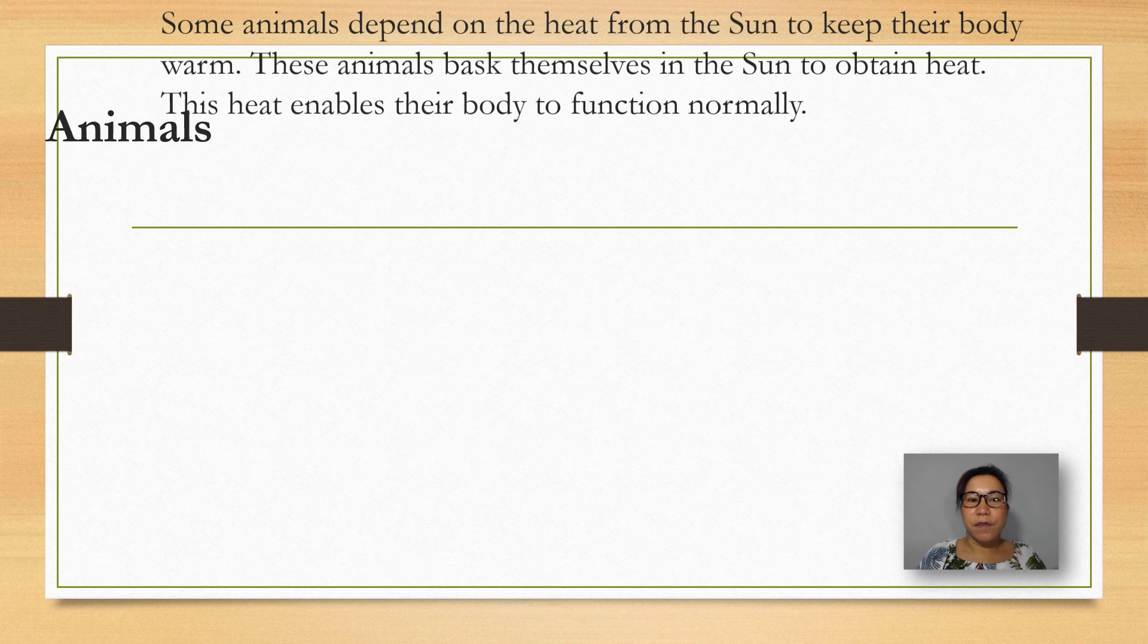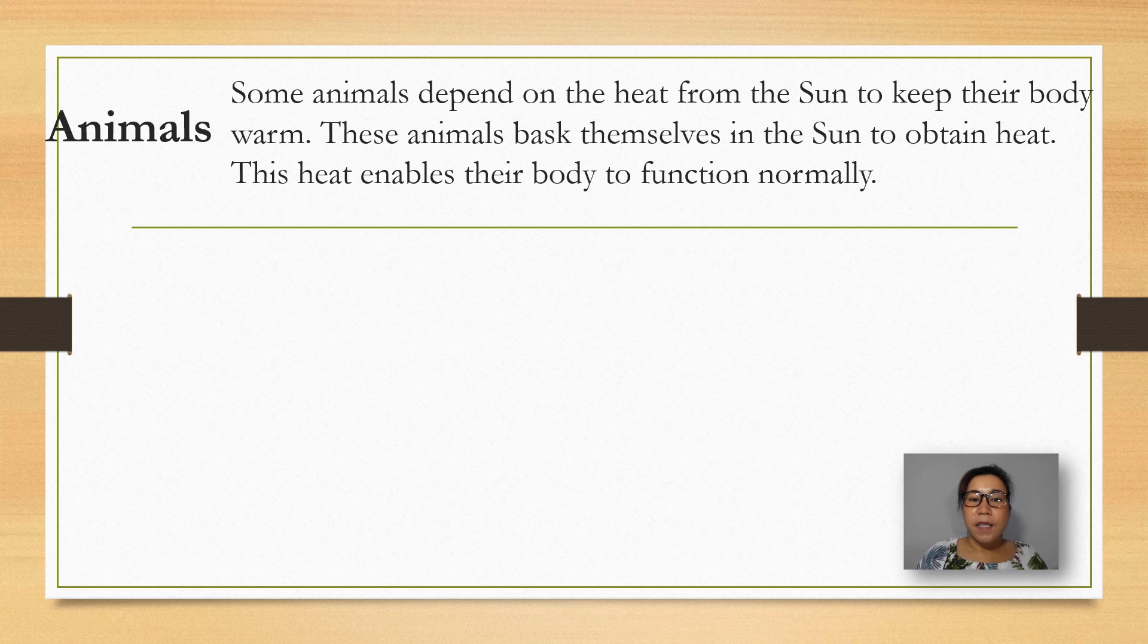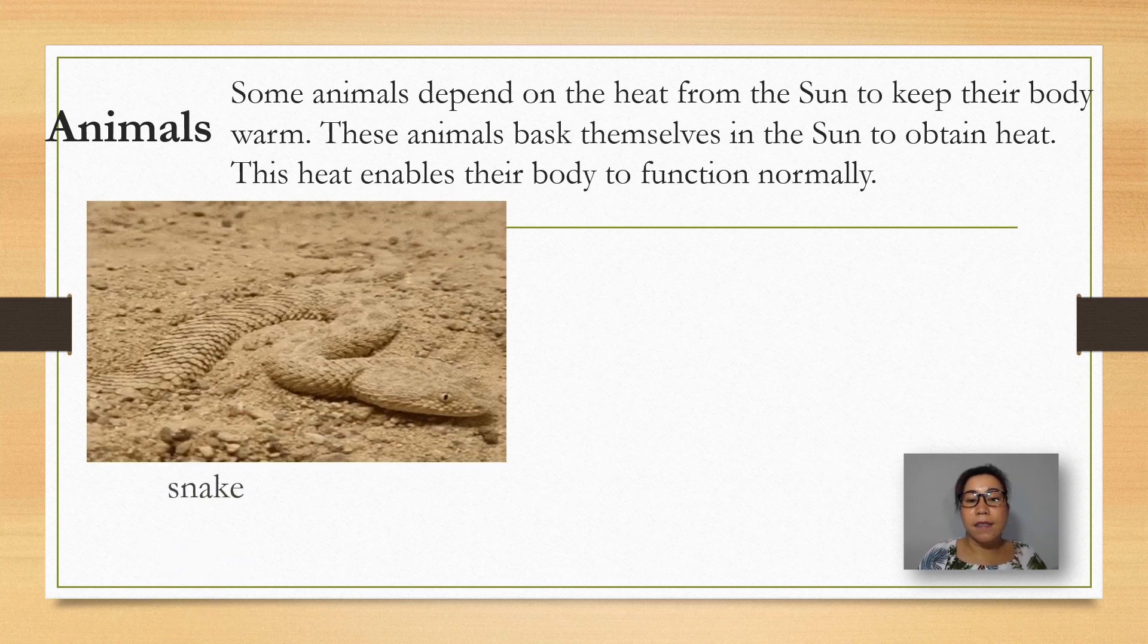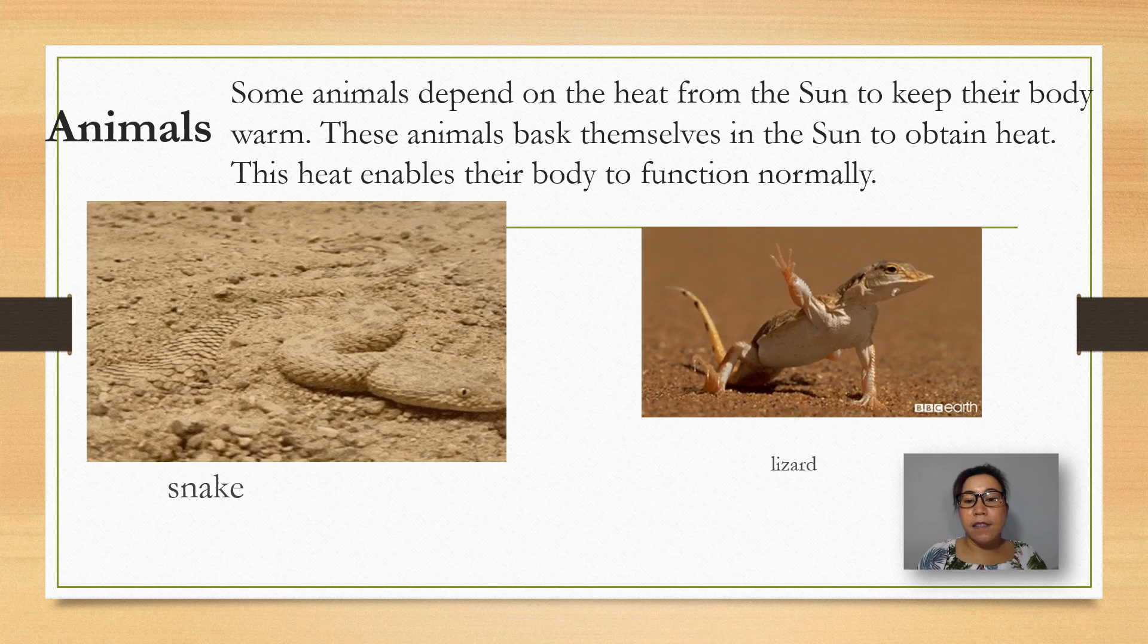For the animals. Some animals depend on the heat from the sun to keep their body warm. These animals bask themselves in the sun to obtain heat. This heat enables their body to function normally. Like the snakes. The lizards.